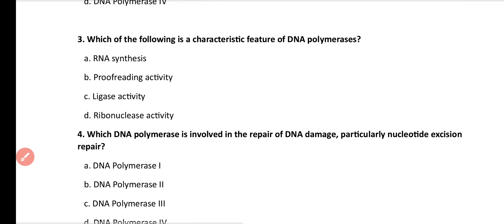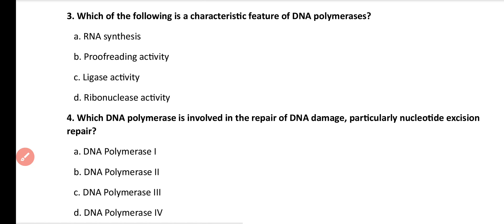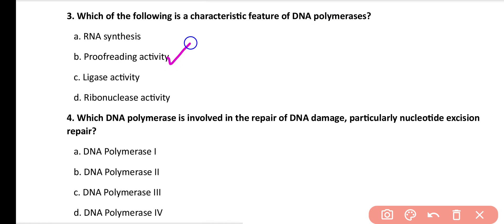Question number 3. Which of the following is the characteristic feature of DNA polymerases? RNA synthesis, proofreading activity, ligase activity, or ribonuclease activity? Correct answer is option B. DNA polymerase enzymes have proofreading activity in the 3 to 5 direction.